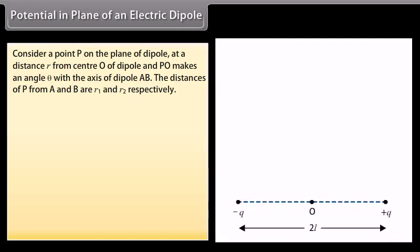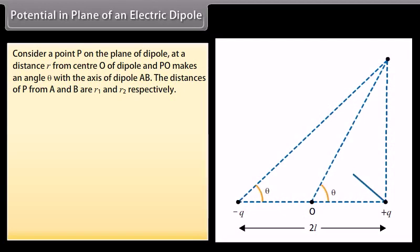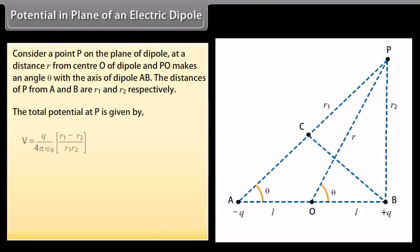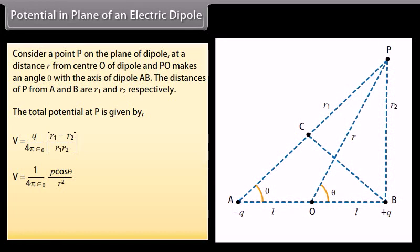Potential in the plane of an electric dipole. Consider a point P on the plane of the dipole at a distance R from center O, where PO makes an angle theta with the axis of the dipole AB. The distances of P from the two charges are R1 and R2 respectively. The total potential at P is given by V equals Q upon 4π ε₀ multiplied by (R1 minus R2) upon R1R2, which equals 1 upon 4π ε₀ multiplied by P cos θ upon R squared. This is a generalized expression for the potential of a short dipole at any point on the plane of the dipole.